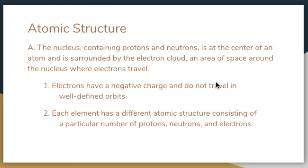You might think electrons resemble planets circling the sun, but they are very different. First, planets have no charge, but the nucleus has a positive charge and electrons have negative charges. Second, planets travel in predictable orbits — you can calculate exactly where one will be at any time — but this is not true for electrons. Although electrons do travel in predictable areas, it is impossible to calculate the exact position of any one electron. Instead, scientists use a mathematical model that predicts where an electron is most likely to be.